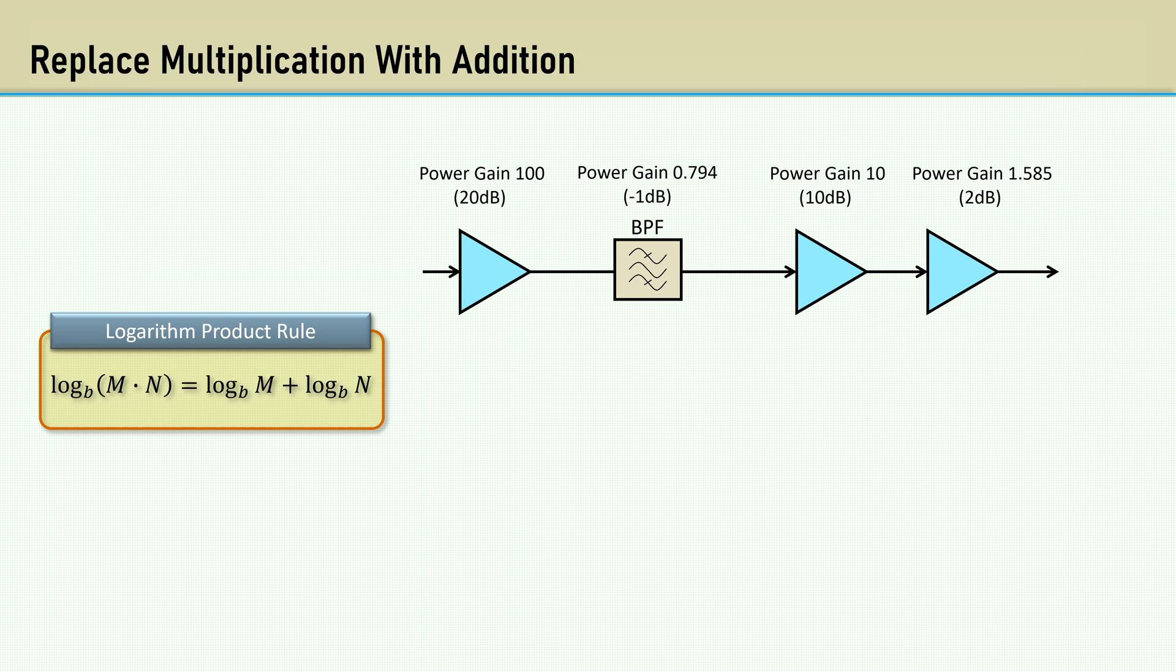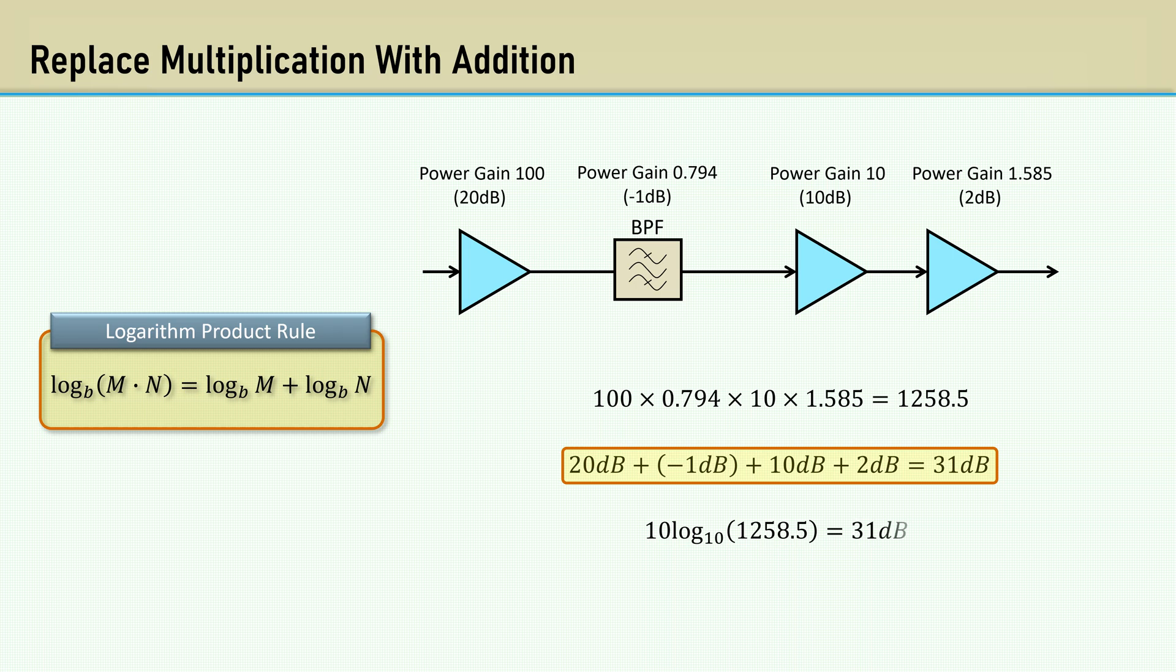This short example illustrates a very strong property of decibels. Because the dB is a logarithmic unit, the gain of a chain of stages when expressed in dB is simply the sum of the gains of each stage. Here are the power gains or losses of a chain multiplied together, which results in a gain of 1258.5. It's much more simple to just add the decibel values. And here's proof that the log of 1258.5 is 31 dB.